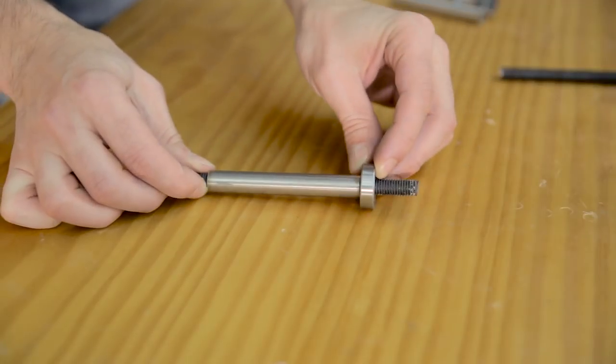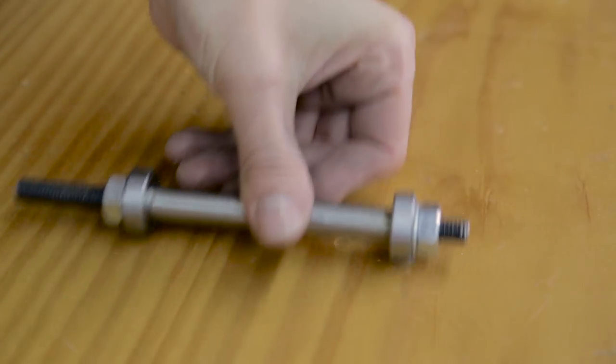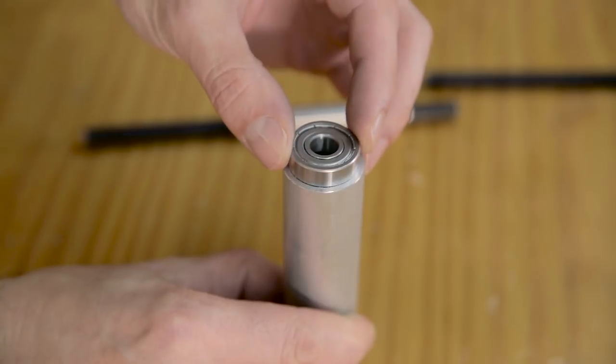The steel pipe will function as buffer between the bearings, like this. And at the same time, the bearing must fit into the aluminum pipe.